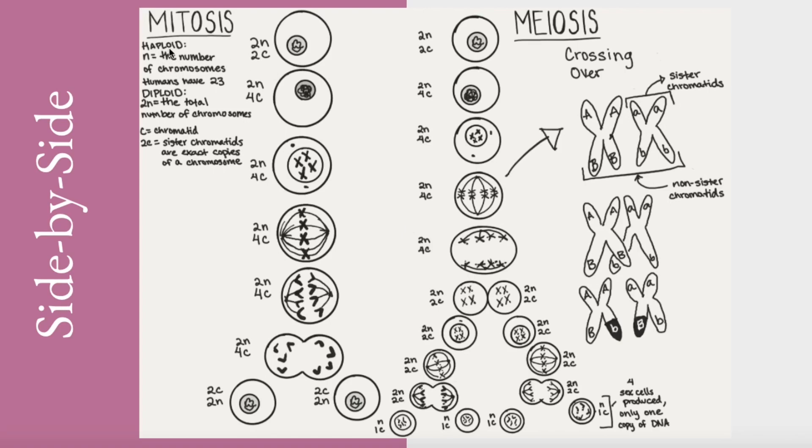She has notated here, a haploid cell has half the number of chromosomes with the letter N. A diploid cell will be shown as 2N with the total chromosomes. C stands for chromatids. So when you see 2C, the sister chromatids are the exact copies of a chromosome. In mitosis, we see this cell entering prophase, metaphase, anaphase pulls them to the opposite poles, telophase with the cytokinesis ending up with an exact copy of what you started with.